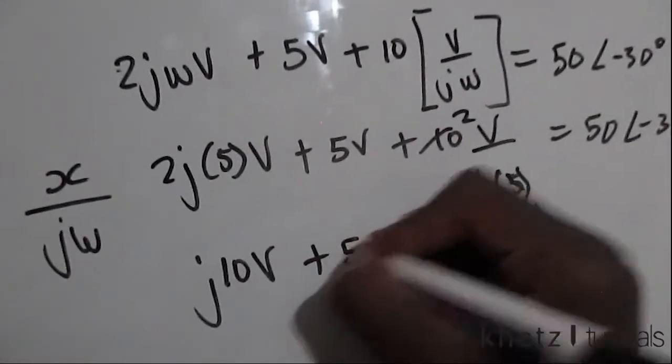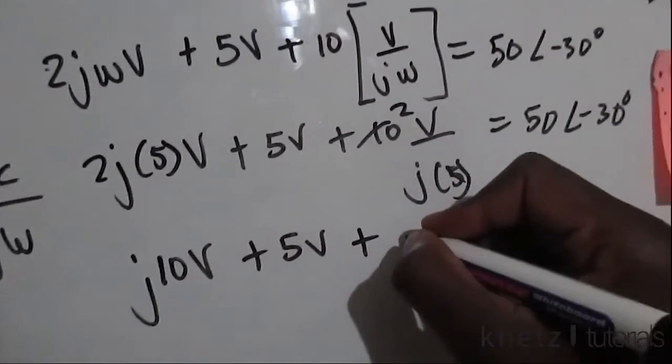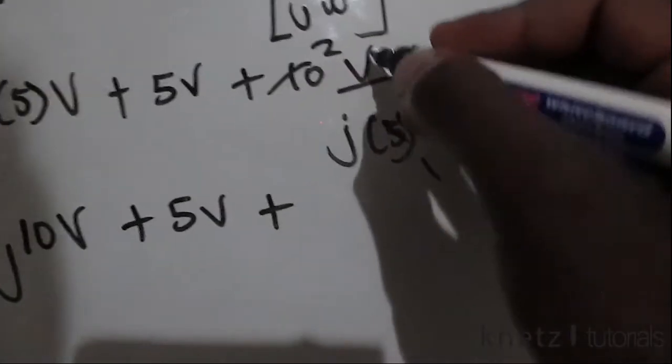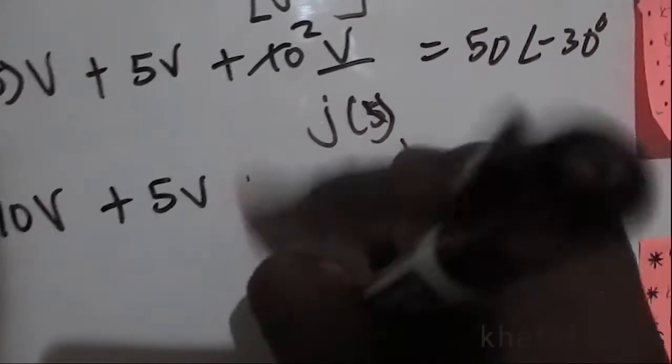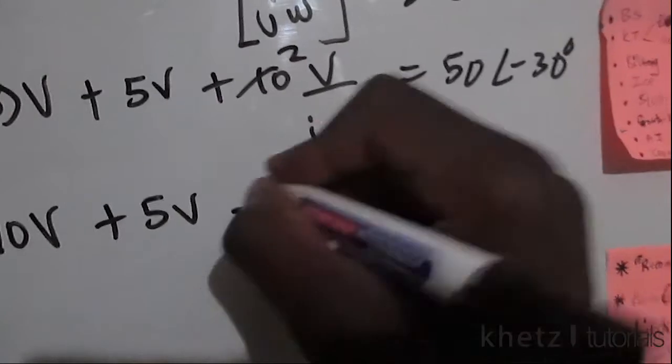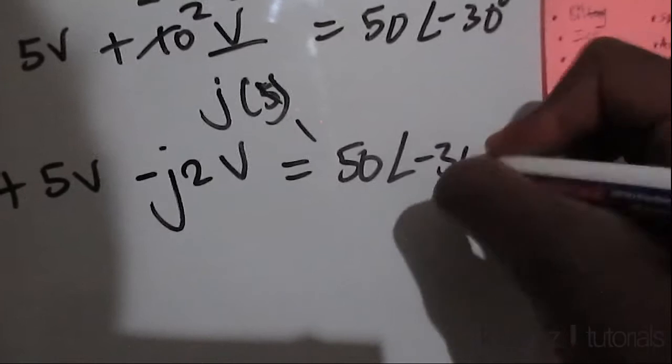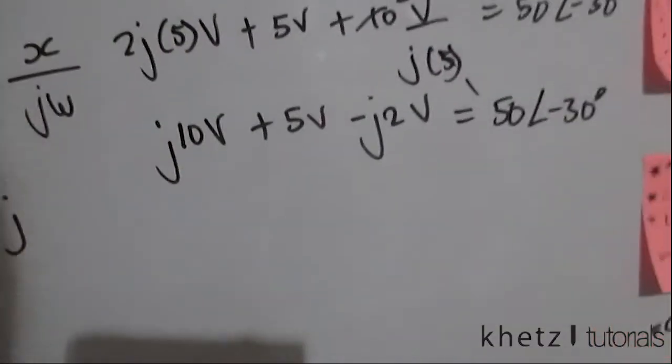Plus 2, now 1 over j, just a reminder, 1 over j is equal to negative j. So we have v over j, so it's going to be negative j2v. Then we have equals to 50 with an angle of negative 30 degrees.